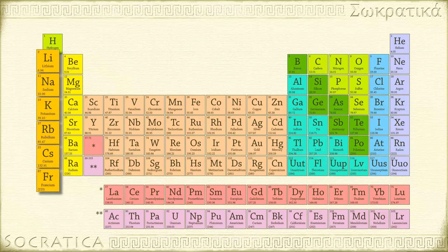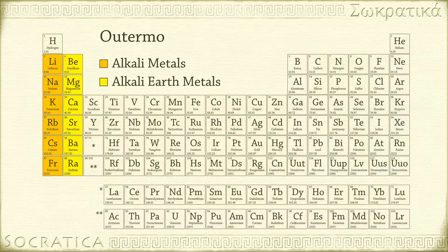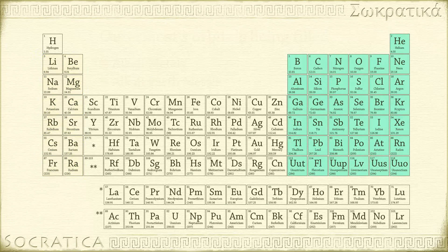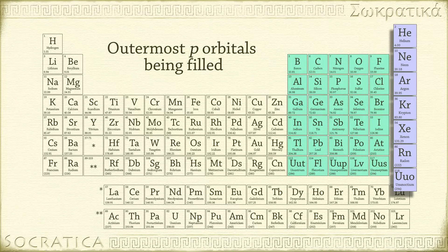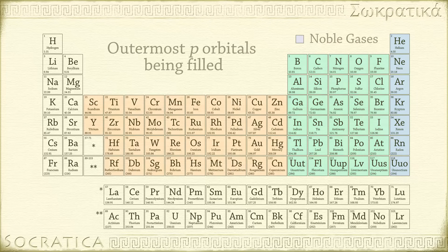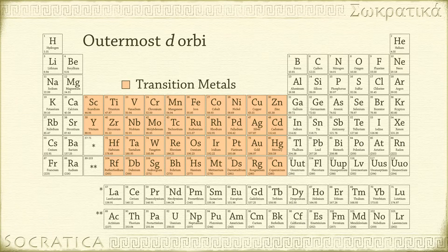The two groups on the left are the alkali metals and the alkaline earth metals — the s orbitals in the outermost shell are being filled in these groups. On the right is a block of six columns where the outermost p orbitals are being filled. On the far right are the noble gases, which all have a filled valence shell of electrons. In the middle is a block of ten columns, the transition metals, in which the outermost d orbitals are being filled.